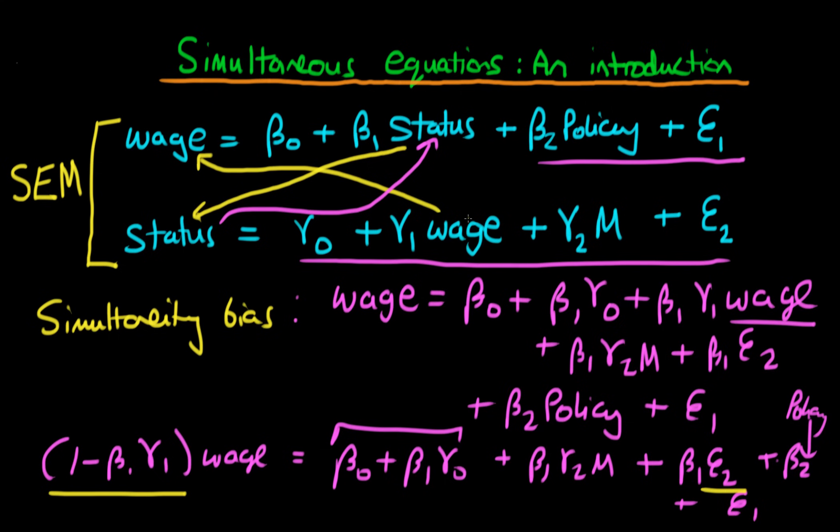And because wage is correlated with epsilon 2, that means that in this second relationship up here, we have got some interaction between our independent variable and our error term. And because of this interaction, that means that we have endogeneity. And because we have endogeneity, we know from Gauss-Markov that that is going to result in our estimates via OLS being both biased and inconsistent.